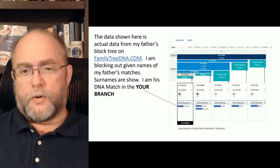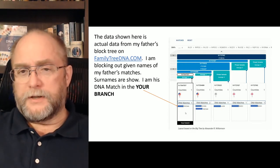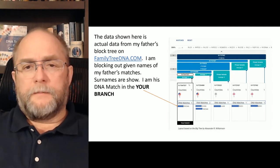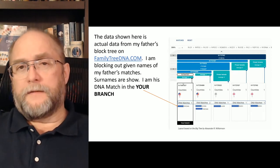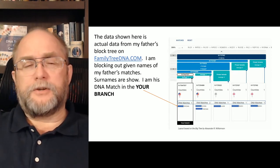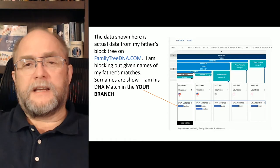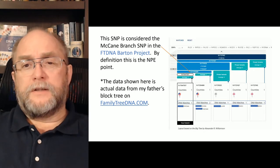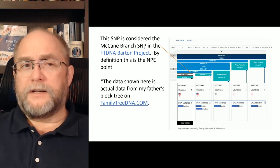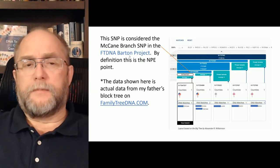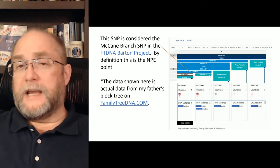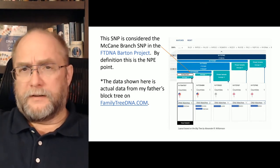There are two of us here — it says 'your branch,' which is my father's branch, and I'm the other person under there. This is a SNP defined in Family Tree DNA that represents my branch of the McCain line. My father and I have tested and we have this SNP that's unique to the two of us. Stepping up one more, you have FT294408, which is considered the McCain branch SNP in the Barton project we're in. This defines the McCain branching and represents our EKA, as covered in the previous overview video.